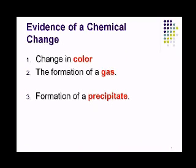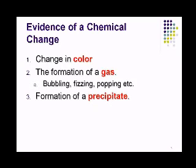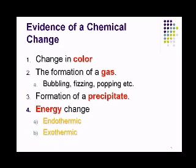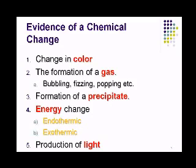There are actually five clues to help determine if a chemical reaction is taking place: color change, formation of a gas (including bubbling, fizzing, or popping), precipitate formation, energy change, and production of light. Energy changes can be exothermic — if mixing two substances releases heat and feels hot — or endothermic — if it suddenly feels cold, drawing heat into the reaction. If you mix things together and light forms or starts to glow, you can be pretty sure a chemical change is occurring.